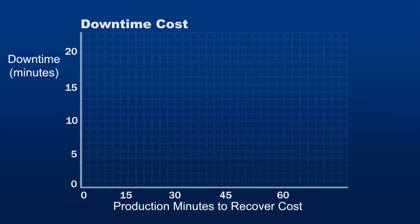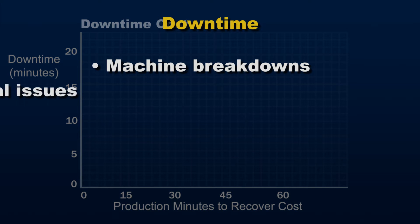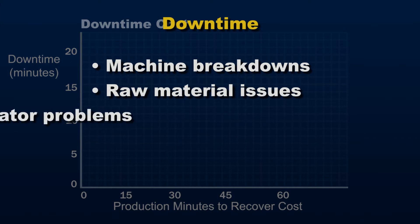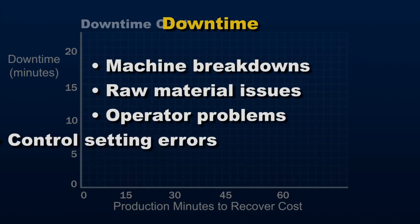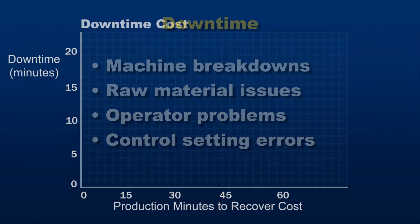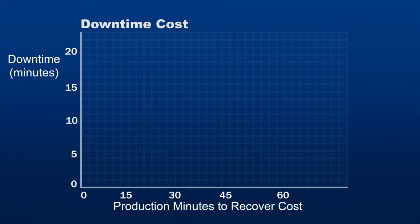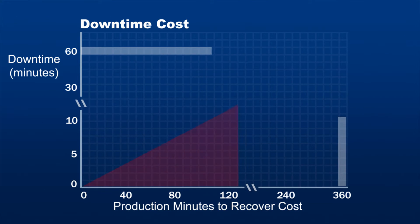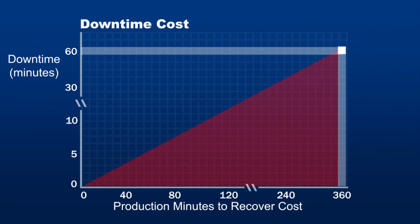Downtime is any interruption in production. It could be machine breakdowns, raw material issues, operator problems, control setting errors, or any other cause. A five-minute downtime will take 30 to 40 minutes of good production to pay for that five minutes. An hour delay costs about six hours of good production to pay for the delay.